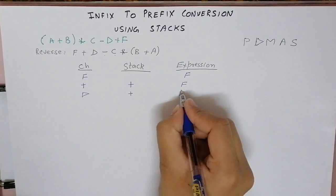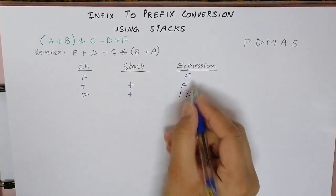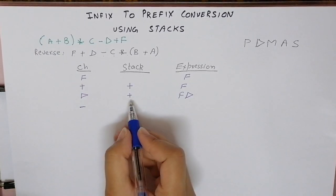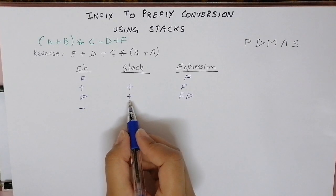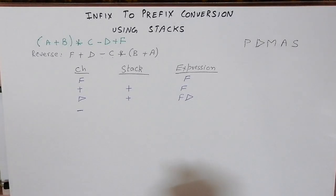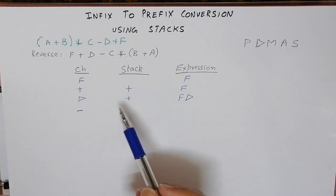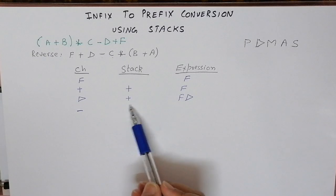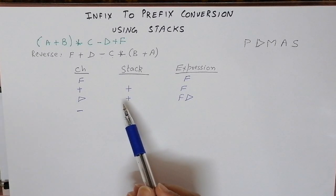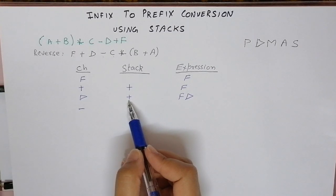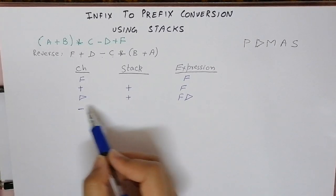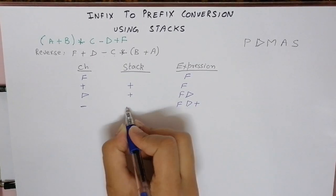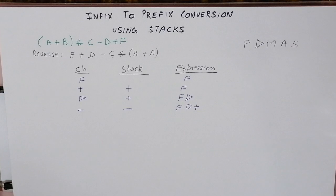Next we encounter the operator minus. The stack already has plus. The rule states: if you encounter a character having equal or lower precedence than the topmost element of the stack, you pop out all operators having higher or equal precedence than the character encountered. So plus is popped out, minus becomes part of the stack, and the expression becomes F D plus.